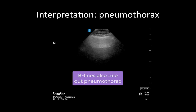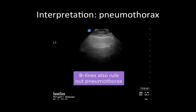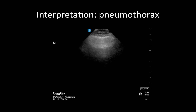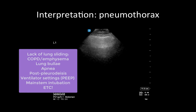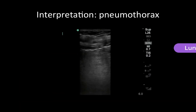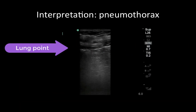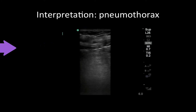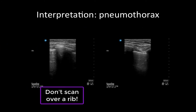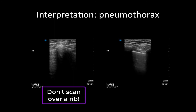In addition, the presence of B-lines also effectively rules out pneumothorax. The absence of lung sliding should always be interpreted in clinical context, as there are other factors which can lead to a loss of lung sliding, such as COPD or emphysema, decreased respiratory effort, or high ventilator settings. The only finding which definitively rules in pneumothorax is the presence of a lung point, as demonstrated here. Finally, when searching for lung sliding, make sure you're not scanning over a rib, as demonstrated on screen left. Ribs create a bright hyperechoic line with no movement, which can sometimes be misinterpreted as a loss of lung sliding.